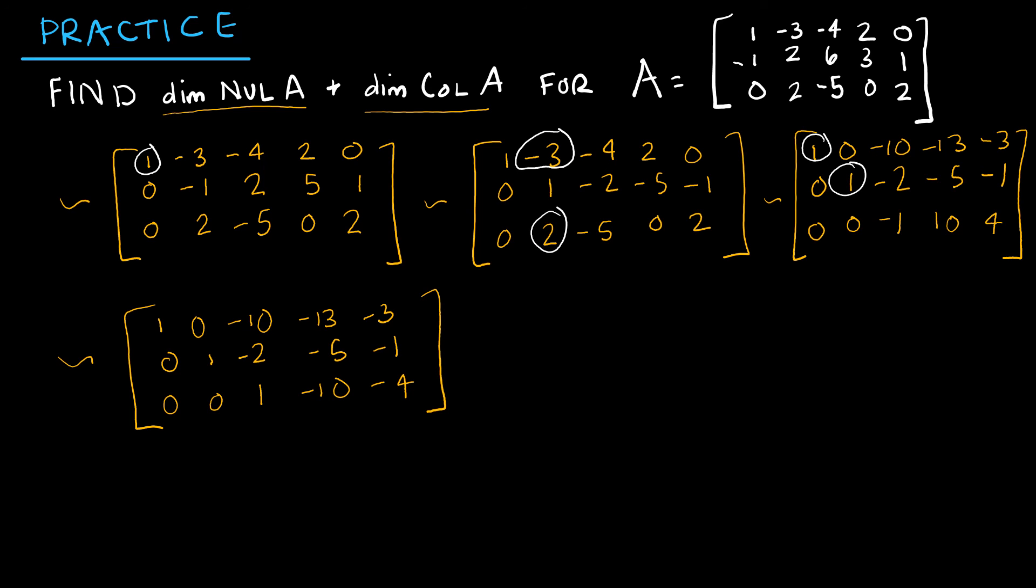And you might be asking, well, did you have to do the last step? No, I didn't. But I'm a perfectionist, so I had to just get it all the way down to reduced row echelon form. What I have found out is that I have three pivot columns, and I have two free variables.